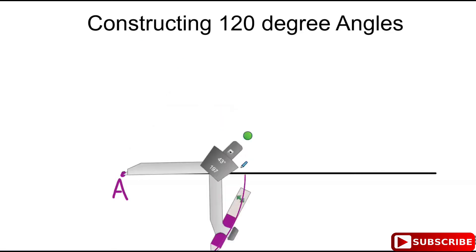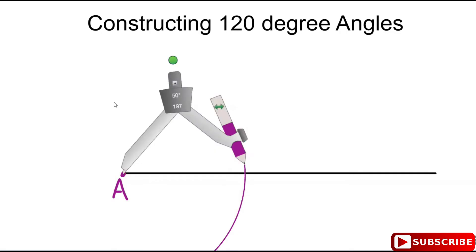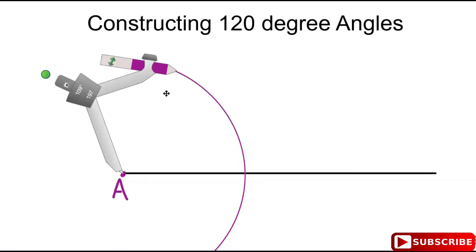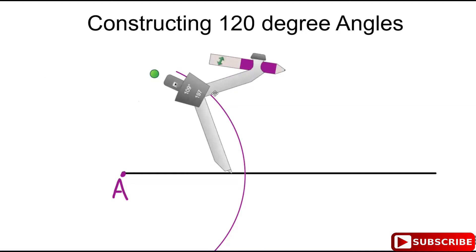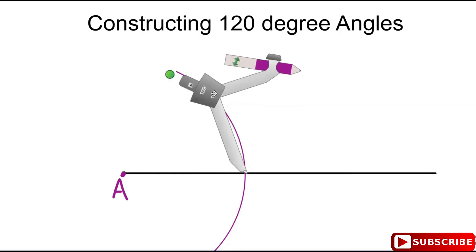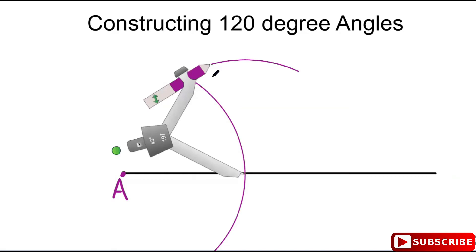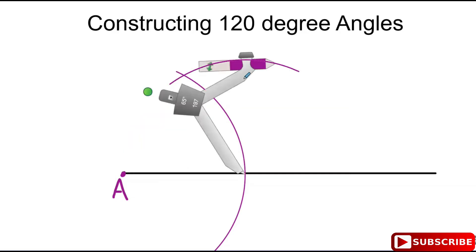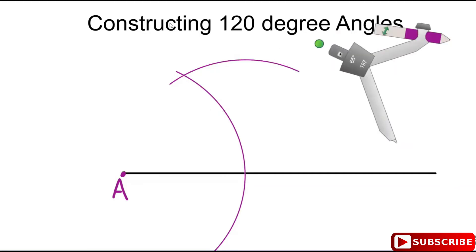This point of intersection can be labeled as X. Then swing your arc from X using the same degree of swing from A to construct your 60-degree angle. It's always good to label the points, so we label that point as X.